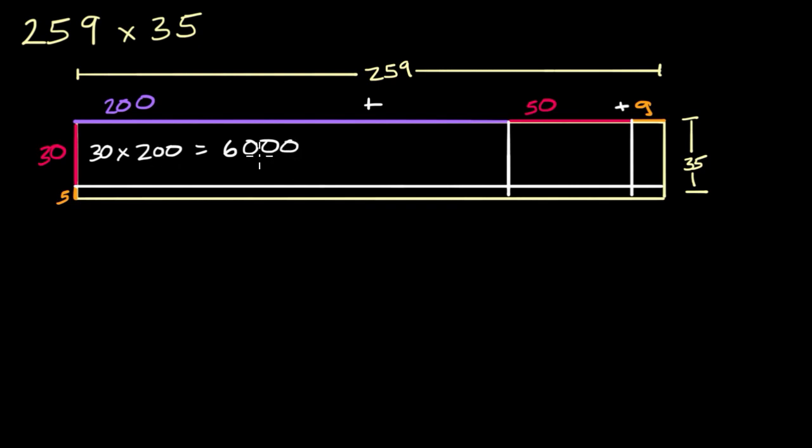Or some of you might say, okay, 3 times 2 is 6, and then I have these three zeros, which is equal to multiplying by 10 three times, or multiplying by 1,000, so it's 6,000.